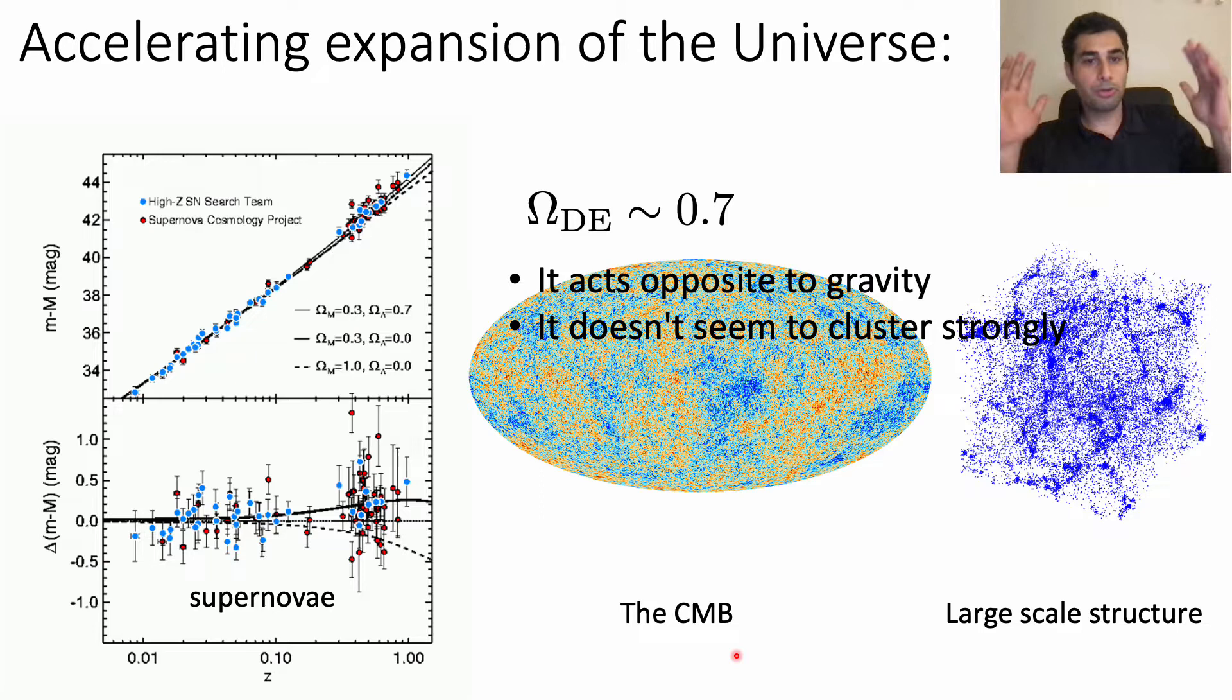At cosmological scales it has to have anti-gravity behavior and this component shouldn't cluster significantly in small, especially in small scales.